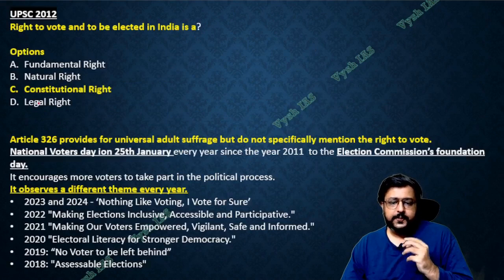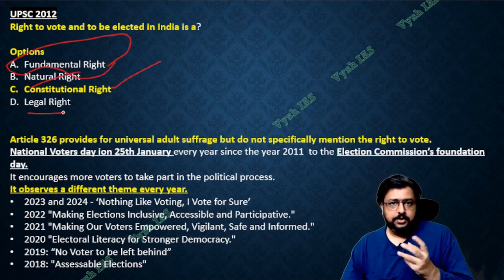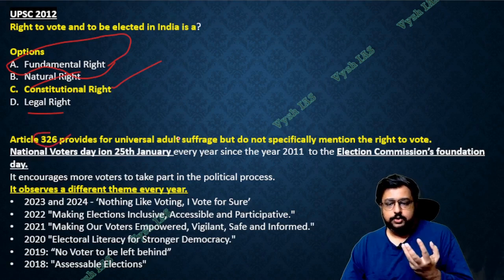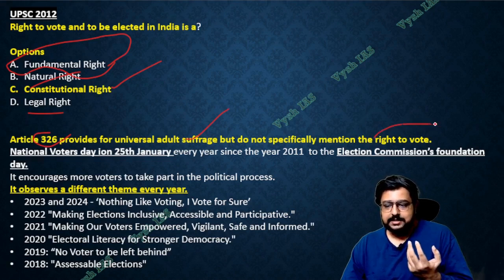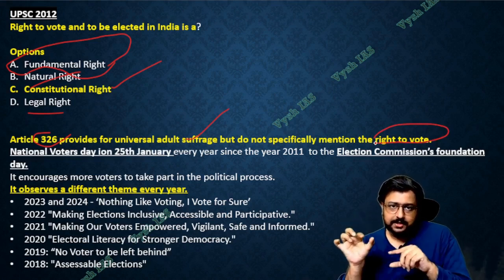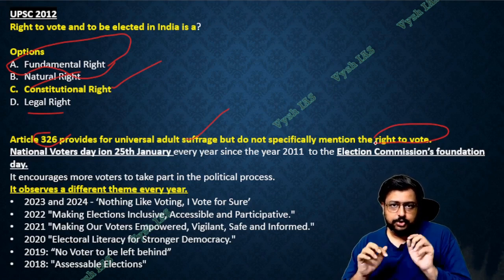So first, the question we saw: right to vote — it is a constitutional right. Why is it not a fundamental right? Because it is not written between Article 14 to 33. It is not a natural right or purely a legal right — it is a constitutional right because the constitution gives you that right. Article 326 tells that everybody has universal adult suffrage, which means right to vote. But there is no explicit mention of the phrase 'right to vote,' so if UPSC asks in inverted commas whether 'right to vote' is mentioned in the constitution, that may be a different answer.